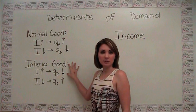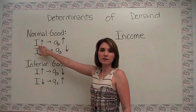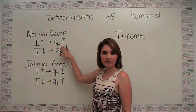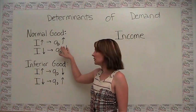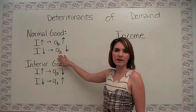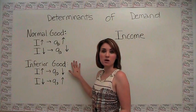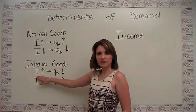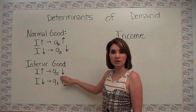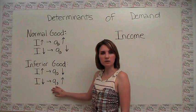We define two different types of goods here. The first is a normal good: as the consumer's income goes up, the consumer wants more of that item and quantity demanded increases. Conversely, when income decreases, demand decreases as well. On the other hand, we have an inferior good: as income goes up, the consumer actually demands fewer of an inferior good, and as income decreases, the consumer demands more of the inferior good.